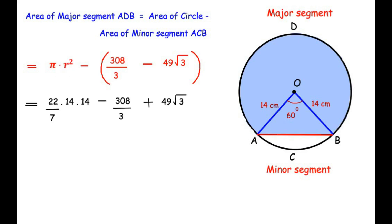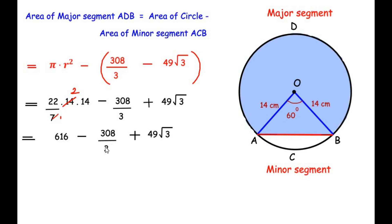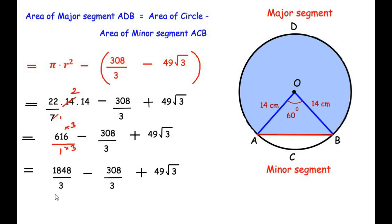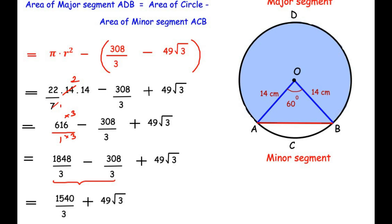Substituting values: (22/7) × 14 × 14, minus (308/3 − 49√3). Expanding the bracket: minus of plus gives −308/3, and minus of minus gives +49√3. Simplifying 7 and 14: we get 22 × 2 × 14 = 616. Taking LCM of 616 and 308/3, we write 616 as 1848/3. Subtracting: 1848/3 − 308/3 = 1540/3. So the area of the major segment is 1540/3 + 49√3.